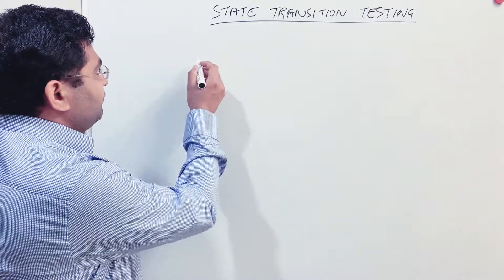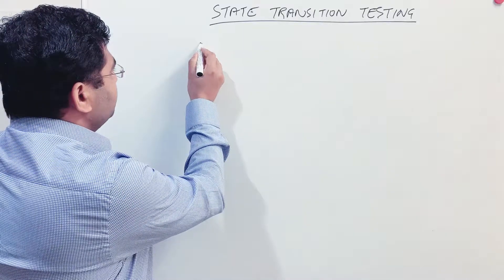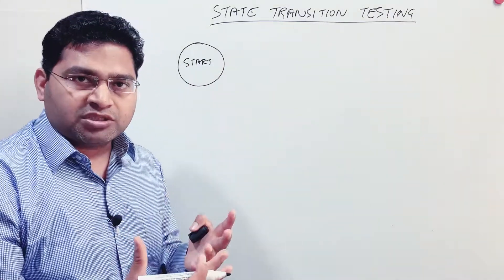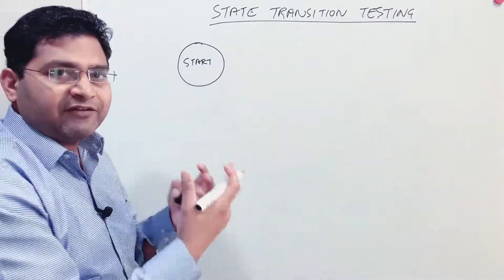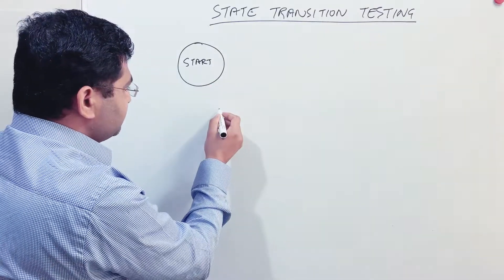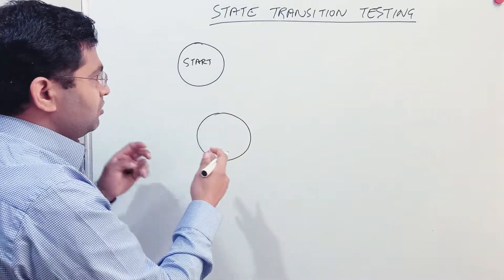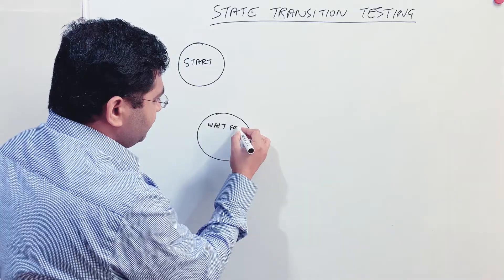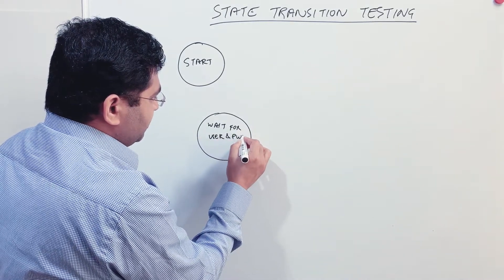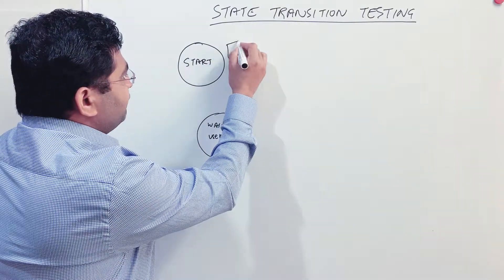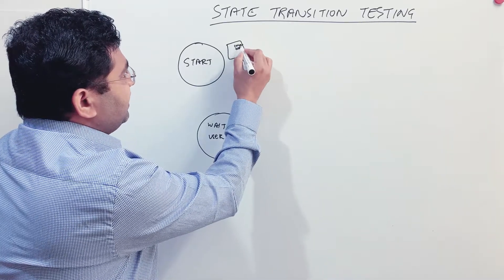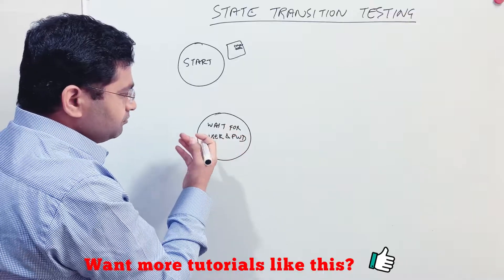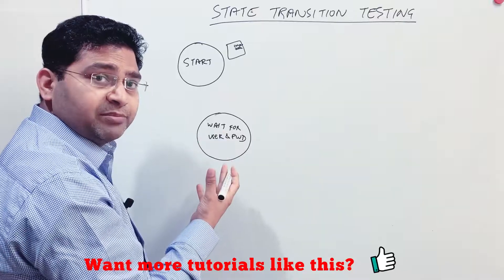If we define the banking login functionality in terms of states: the first is a start state, which is basically the bank website launched and available — you haven't clicked on the login link yet. Once you click on the login link, it will display a page asking for username and password, so 'wait for username and password' is the second state.